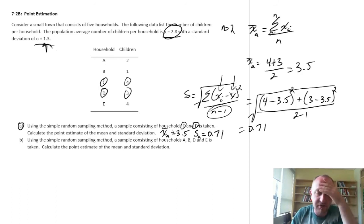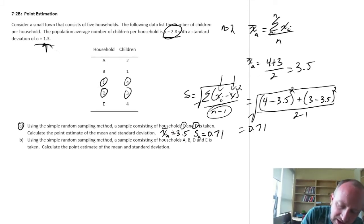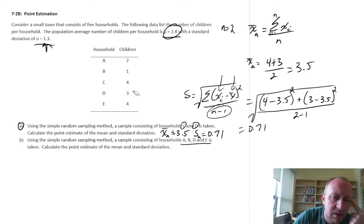So 0.71. So there's my standard deviation for part A is 0.71. Still a little ways off of the population standard deviation, but sample size of only 2 is going to be fairly limiting in its accuracy. And actually, we're going to look at that sampling distributions just a little bit later. Part B, using the same random sampling method here, now we're going to look at a somewhat larger sample, A, B, D, and E.